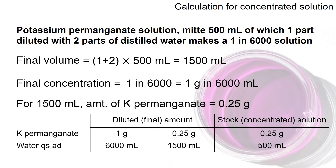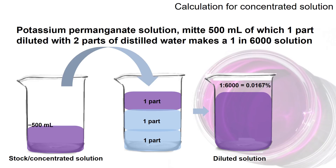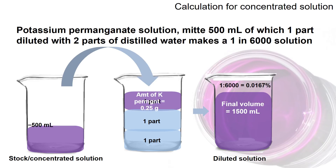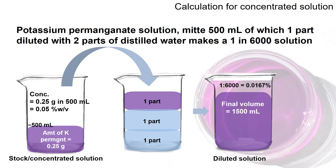Assuming one part equals 500 ml, the final volume is 1500 ml. This solution contains 0.25 grams of potassium permanganate, which actually comes from one part of the concentrated solution. This tells us that in the actual stock concentrated solution, you will have 0.25 grams in 500 ml.